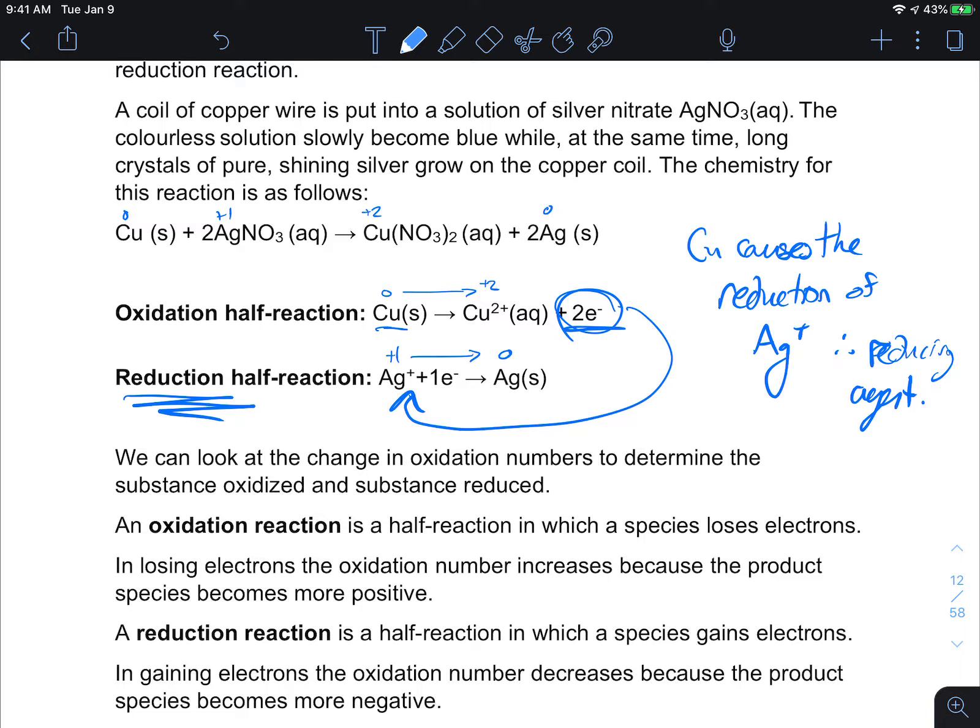By the same token, who absorbed those electrons? Who took those electrons away? Well the silver plus, it absorbs the electrons from copper. It absorbs it. It oxidizes. So therefore silver is the oxidizing agent.